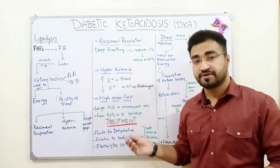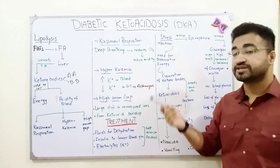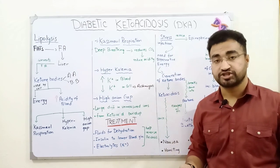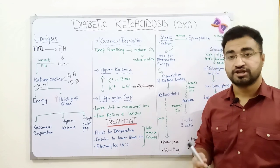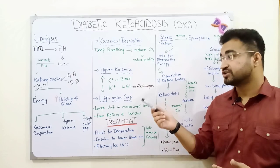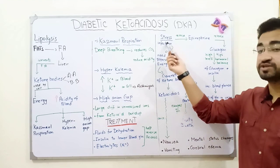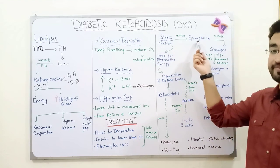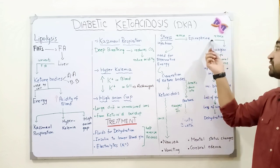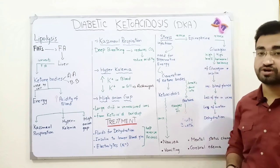Before discussing treatment, let's talk about what happens during stress or infection in diabetic patients with DKA. If a diabetic patient experiences infection or a stress condition, the symptoms become much more severe. The reason is that in cases of stress or infection, the body releases epinephrine — also known as adrenaline — which stimulates glucagon.